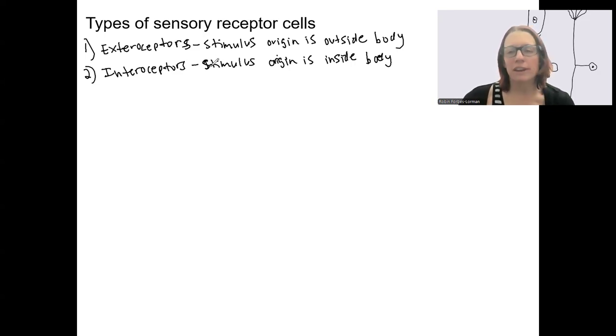A few, a little bit more of exteroceptors. So light, sound, touch, lots of outside things. Inside, the origin is going to be something happening in the body. So it could be stretch within the digestive system or the blood vessels, detecting heartbeat, pH, things that are occurring within the body. It's very important for homeostasis.